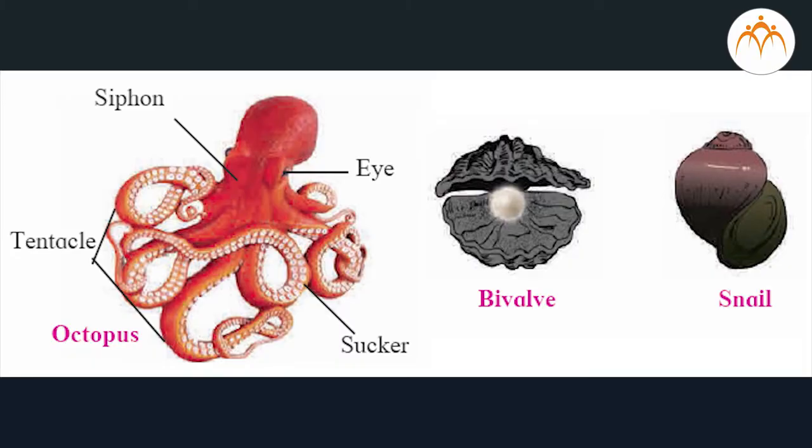Which animals from phylum Arthropoda have the shortest and longest lifespan? Why has it been said that only insects directly compete with humans for food? Phylum Mollusca: the body of these animals is soft and slimy, hence they are referred to as molluscs. This is the second largest phylum in the animal kingdom.